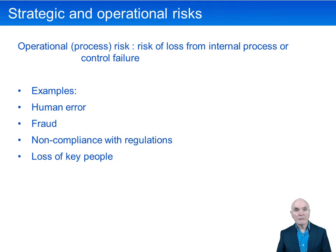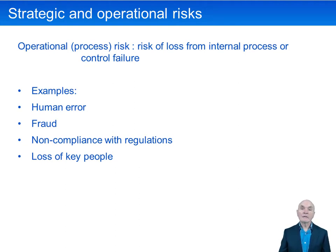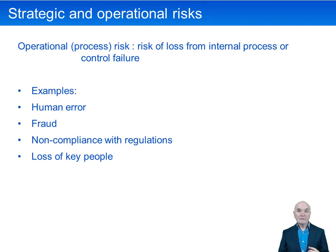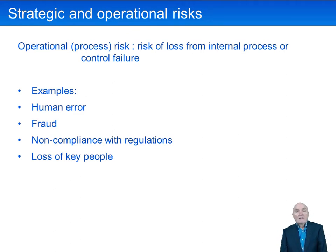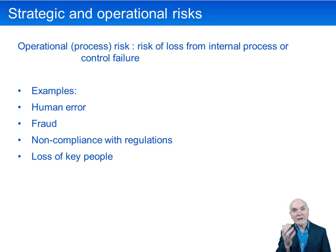Operational risks are much shorter-term — almost day-to-day things that go wrong. Examples include human error such as pressing the wrong button or deleting important files, a machine breaking down and producing faulty products, fraud, non-compliance with regulations as an operational slip, and key people leaving or occasional bad debts.